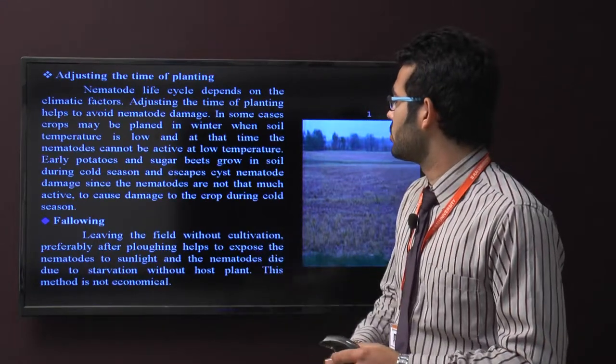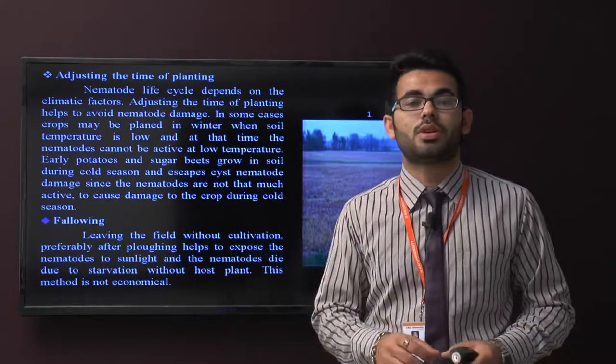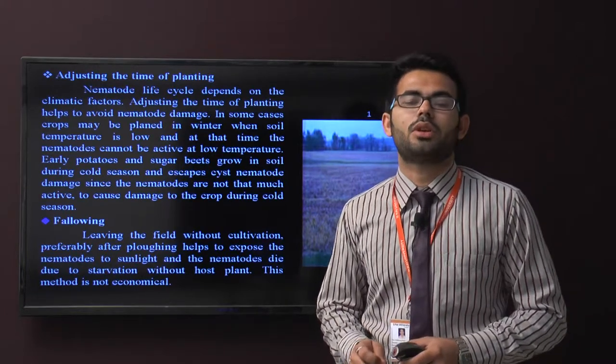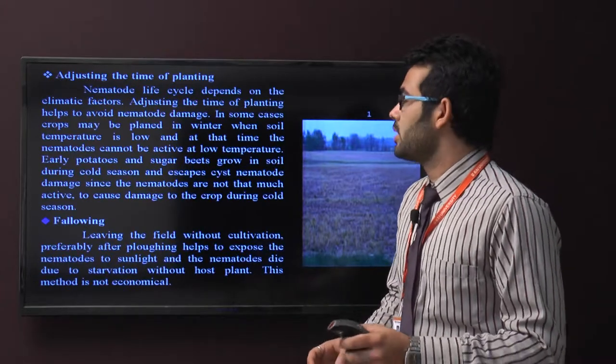Early potato and sugar beets grow in soil during the cold season and accept cyst nematodes during the cold season. Damage is reduced since the nematodes are not that much active to damage the crop during the cold season.